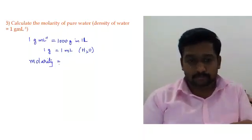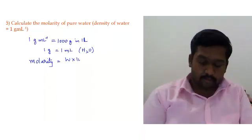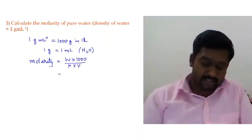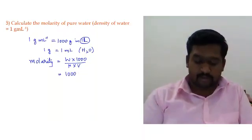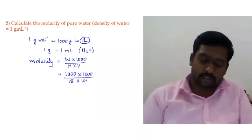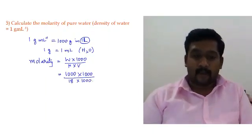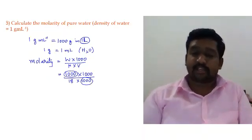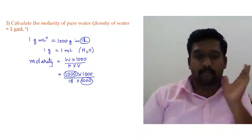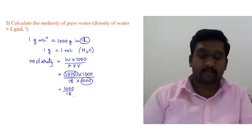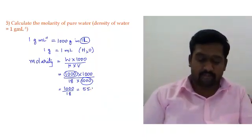Using the formula M = w × 1000 / (M_u × V): with 1000 ml, the mass is 1000 grams. So: 1000 × 1000 / (18 × 1000). The 1000s cancel, leaving 1000/18 = 55.55. So the molarity of pure water is 55.55 M.